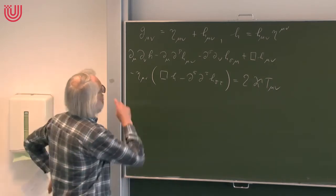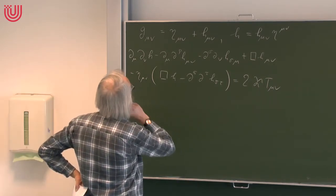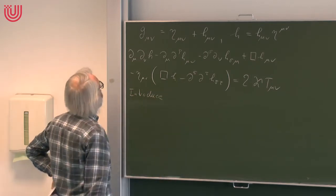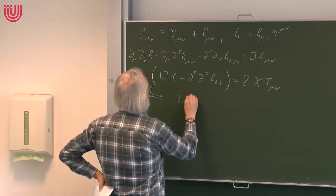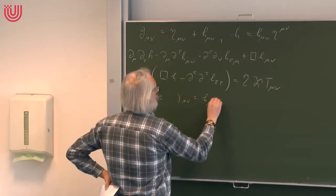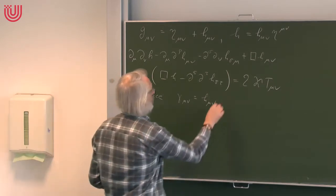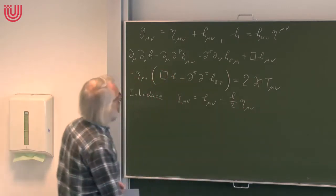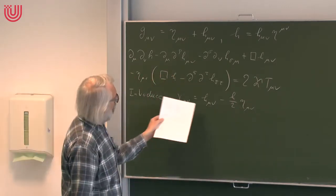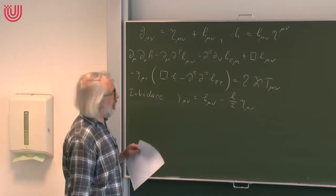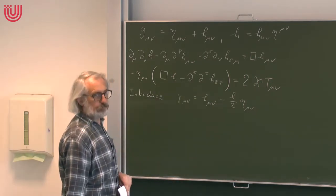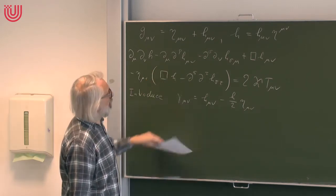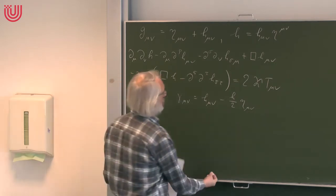The first simplification is that we introduce something we call γ_μν instead of h_μν, where h_μν equals γ_μν minus (h/2)η_μν. Linearizing with respect to h is the same as linearizing with respect to γ, because the relation between the two things is linear. If we rewrite the field equation in terms of γ, it becomes already a little bit simpler.